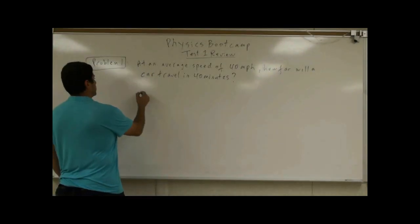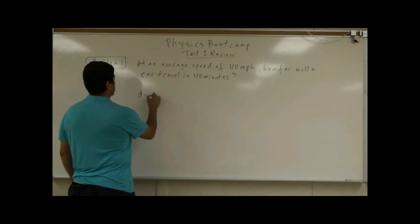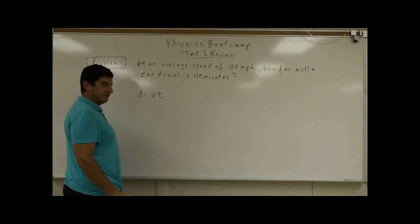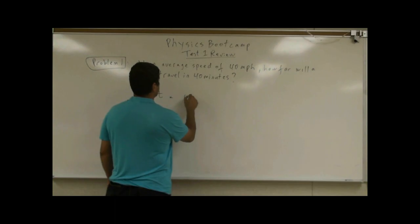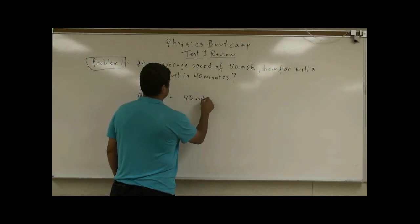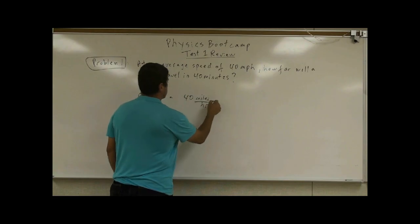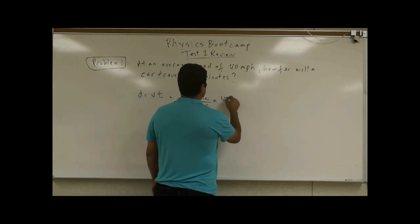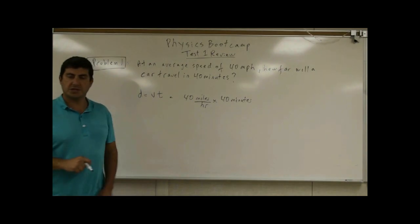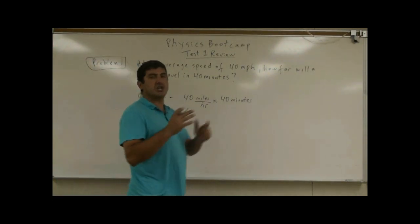The average speed is 40 miles per hour. How far will the car travel in 40 minutes? So the solution: distance is equal to velocity times time. The velocity is equal to 40 miles per hour, multiply it by 40 minutes.